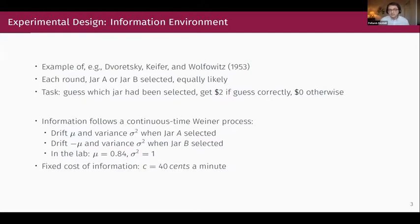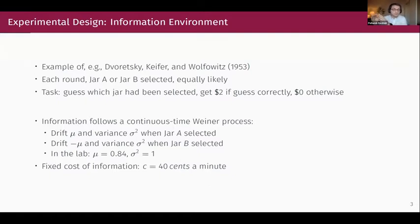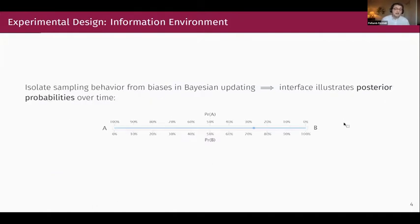A classic setup would draw balls from a jar and show them to participants, requiring them to map information into posterior probabilities of A or B. However, there's a huge body of literature emphasizing just how bad humans are at Bayesian updating, so we didn't want to pollute our results with improper Bayesian updating. Instead, this mechanism feeds posterior probabilities directly to participants. On the top is the probability that state A is correct, going from 0 to 100; at the bottom, state B, also 0 to 100. The dot starts at the very middle, meaning A and B are equally likely, then dances towards A or B with a trend towards the correct state, following the Wiener process translated into a probability — albeit with noise. If you wait long enough, the dot converges to the true state.